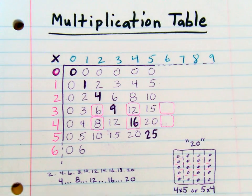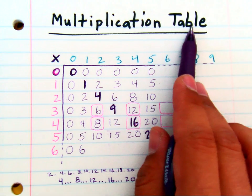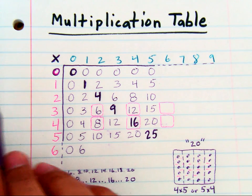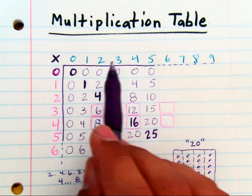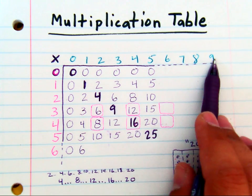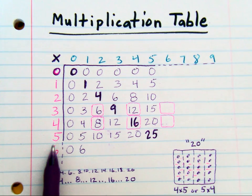This lesson is all about finding patterns in the multiplication table. When you're looking for patterns, the first pattern you need to notice is that this multiplication table has all ten single digits on the top and down the side.